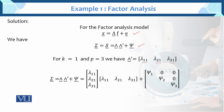Lambda prime is equal to [lambda_11, lambda_21, lambda_31]. Lambda_11 means first variable with first factor, lambda_21 is second variable with first factor, lambda_31 is third variable with first factor — because we are doing one factor solution. The variance-covariance matrix sigma equals lambda*lambda' plus psi.